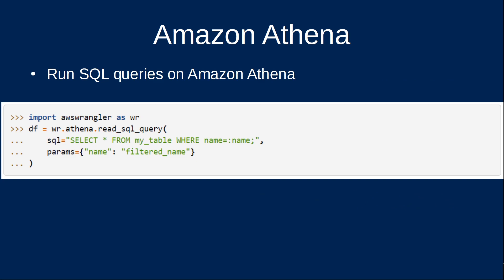Moving on to Amazon Athena — perhaps you don't want your single machine running AWS Wrangler to do all the heavy lifting. Maybe your source data lives in S3 and is considered big data — billions of records — but you only want to ingest a subset into a Pandas data frame. Here you can leverage AWS Data Wrangler to call Amazon Athena, run a SQL query, and return the results in a data frame. That's pretty powerful.